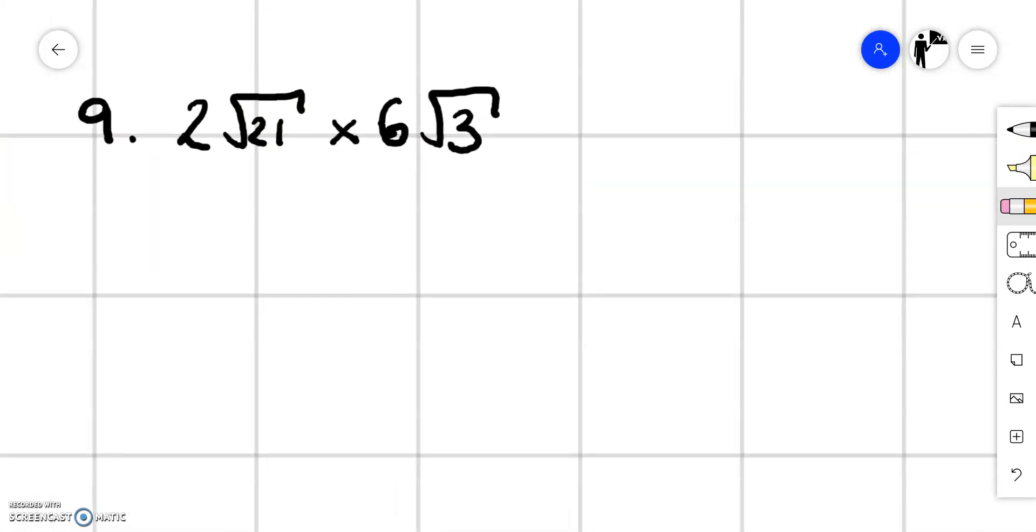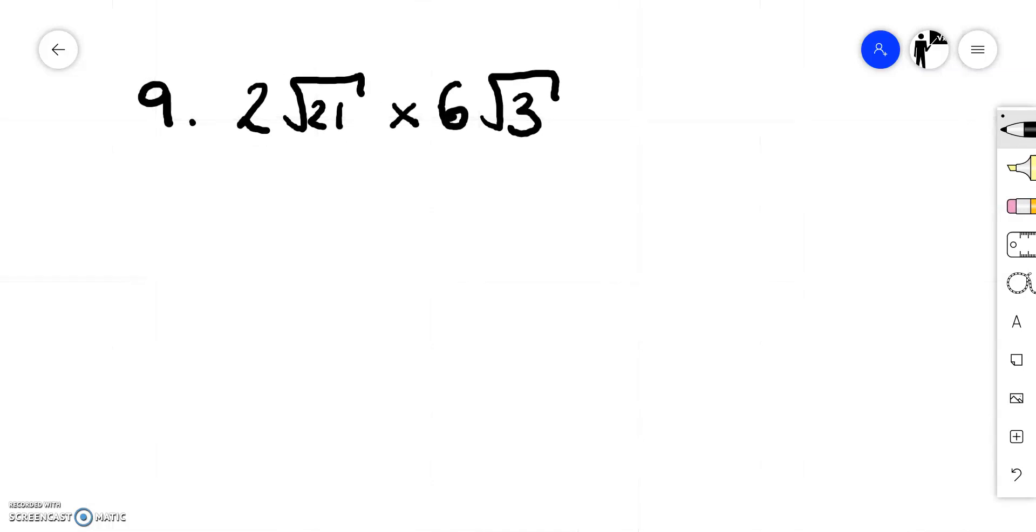Lastly number 9. 2 root 21 multiplied by 6 root 3. What's that? That's going to be 12 root 63. Is there a square number that goes into 63? Yeah well that's 9 times 7.